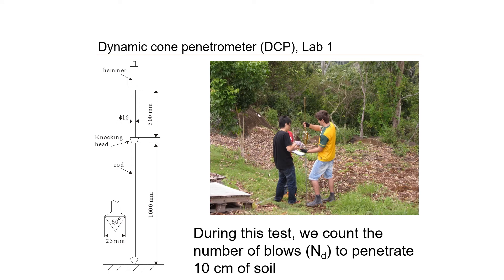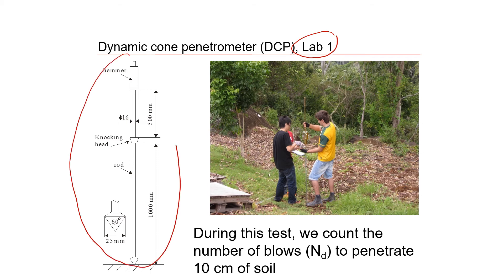If we cannot drill boreholes because they are too expensive, we can use another test called the Dynamic Cone Penetrometer, or DCP test, which you will learn how to do in the first laboratory. The test is straightforward — we bring the DCP equipment to any location we want to investigate, whether a slope or an area where a borehole drill cannot reach. We place it on the surface, then use a hammer to drive the DCP into the soil, measuring the resistance of soil to the penetration of the cone, and we plot these results.